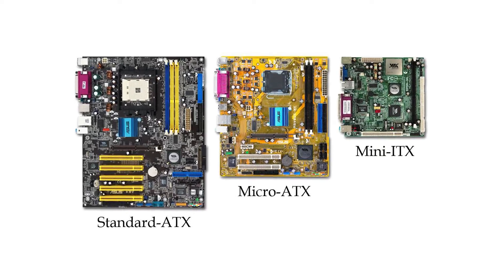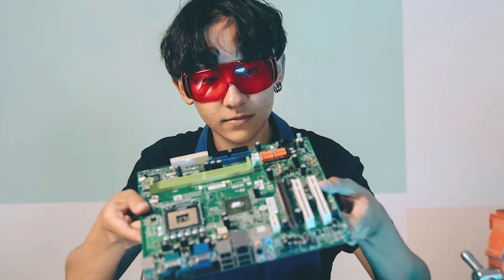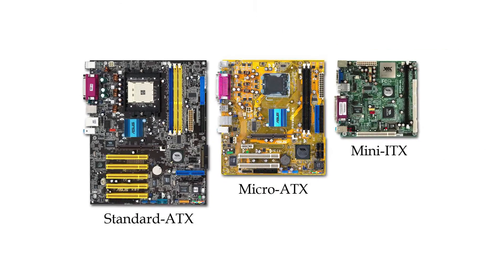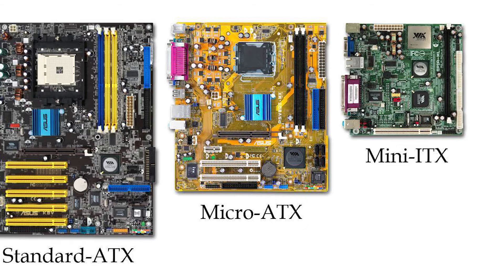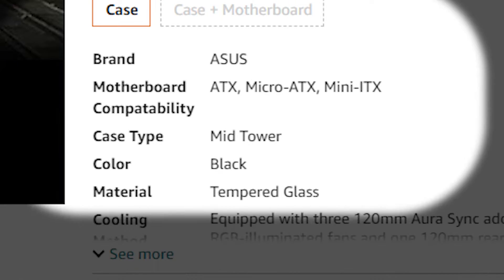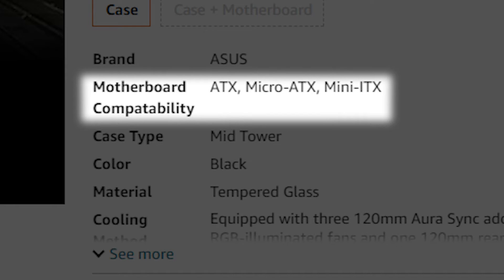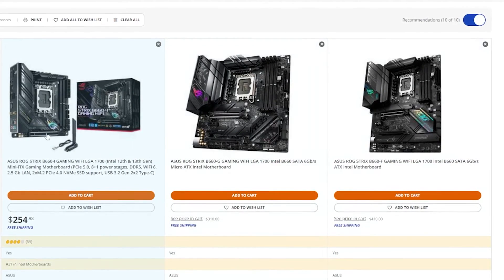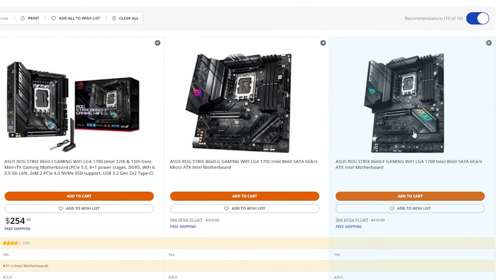Now it's time to validate that everything will go in as smoothly as possible. The first thing is the motherboard size. If you chose your components first, you already know the size of your motherboard. If not, check whether it's a standard ATX, M-ATX (micro ATX), or mini-ITX — the smallest motherboard you can get today. Then go to your case spec sheet and make sure your motherboard size is listed in the compatibility section. If not, look for a similar motherboard in a different size, since many manufacturers make the same model in at least two sizes.